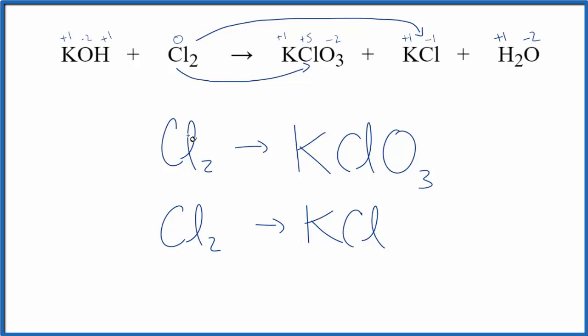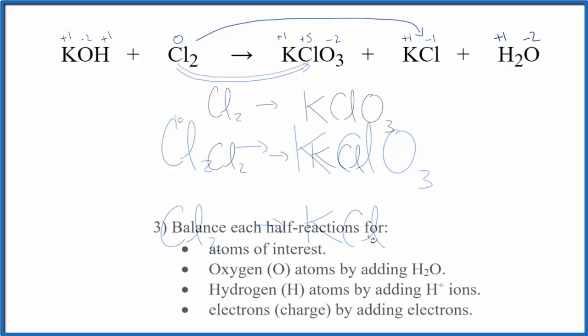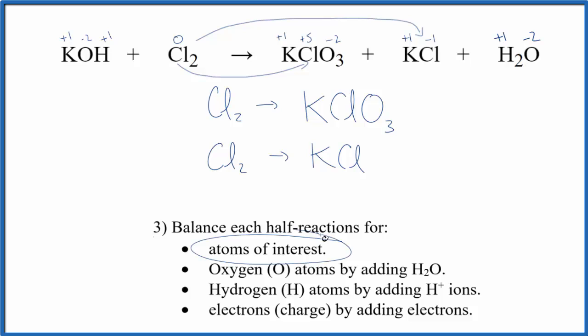So we start out with Cl₂ for both of these, but we have oxidation here and reduction. Let's shrink this down. So now we need to balance the atoms of interest. We have two chlorines here and just one here. Let's put a 2 there.